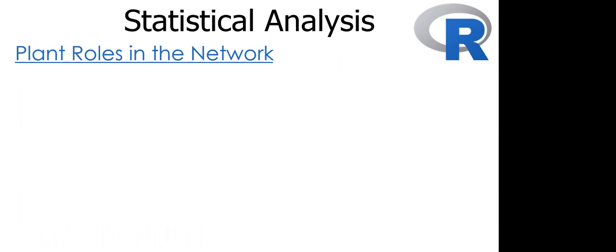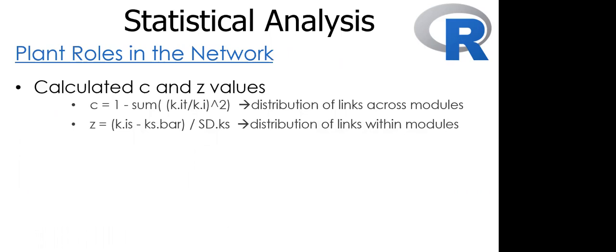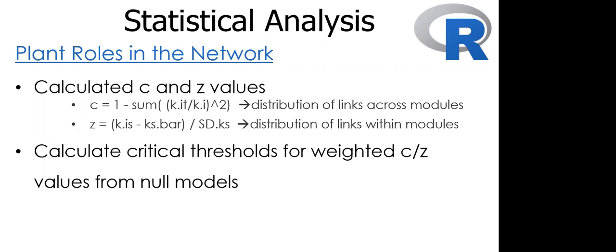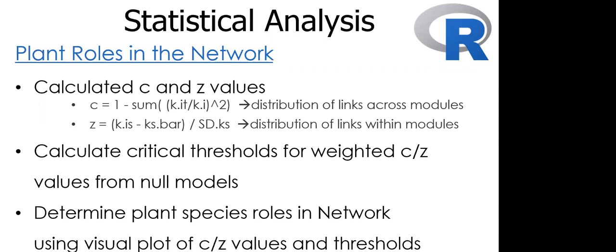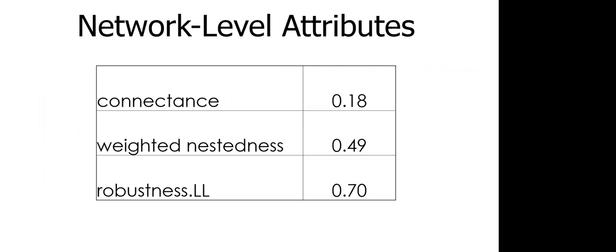I then calculated weighted connection and participation coefficients using interaction strength because I'm using a quantitative or weighted network which takes into account the frequency of interactions as opposed to a binary network which only recognizes the presence or absence of an interaction. Next I established critical thresholds of the c and z scores from our null models using 95% quantiles, and then lastly I plotted the cz values among those thresholds in order to identify the key network roles. Using bipartite, I looked at a few network level indices that relay the stability of the network to determine how resilient it may be to disturbance.